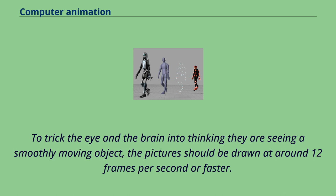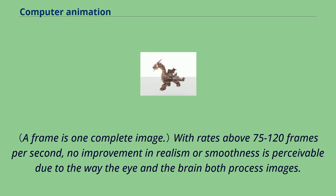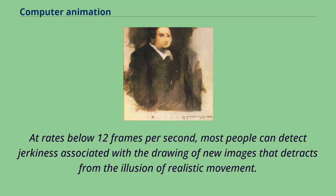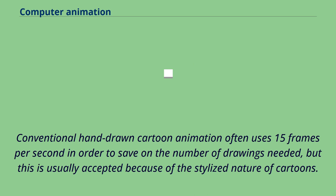To trick the eye and the brain into thinking they are seeing a smoothly moving object, the picture should be drawn at around 12 frames per second or faster. With rates above 75 to 120 frames per second, no improvement in realism or smoothness is perceivable. At rates below 12 frames per second, most people can detect jerkiness that detracts from the illusion of realistic movement. Conventional hand-drawn cartoon animation often uses 15 frames per second in order to save on the number of drawings needed, but this is usually accepted because of the stylized nature of cartoons.